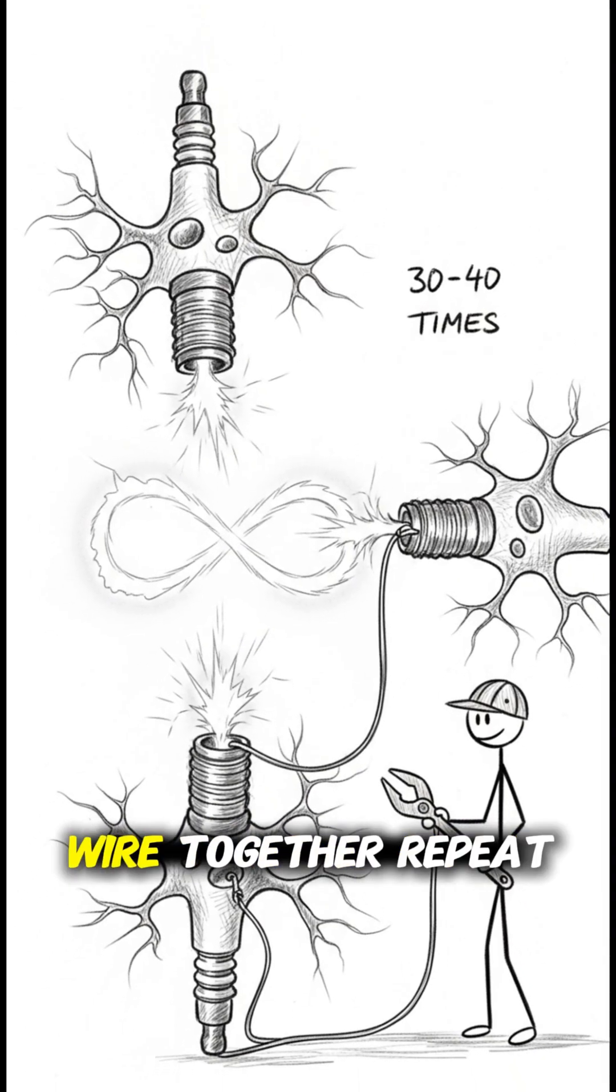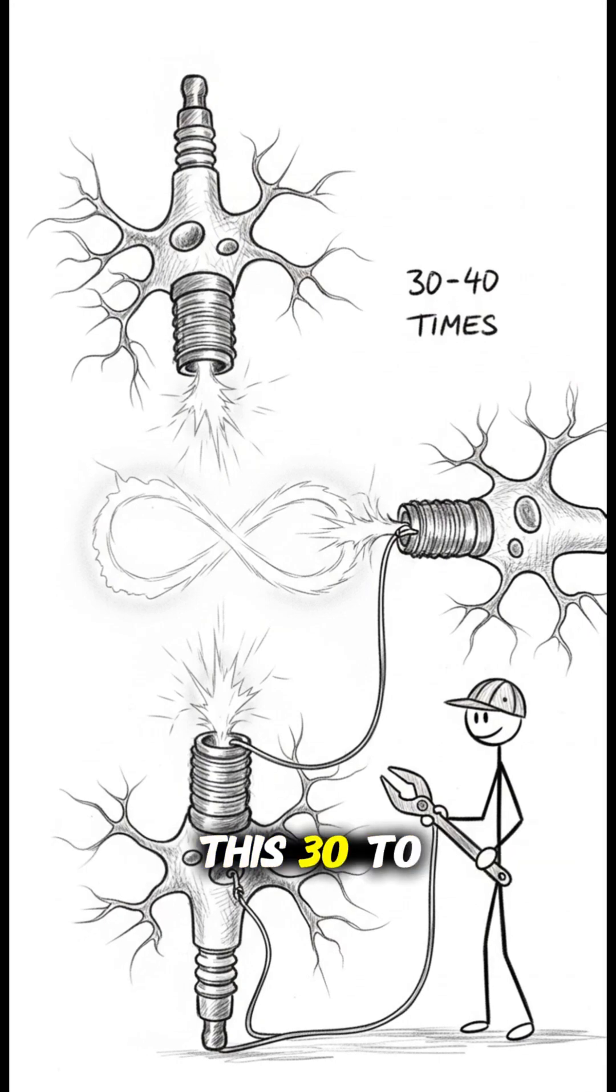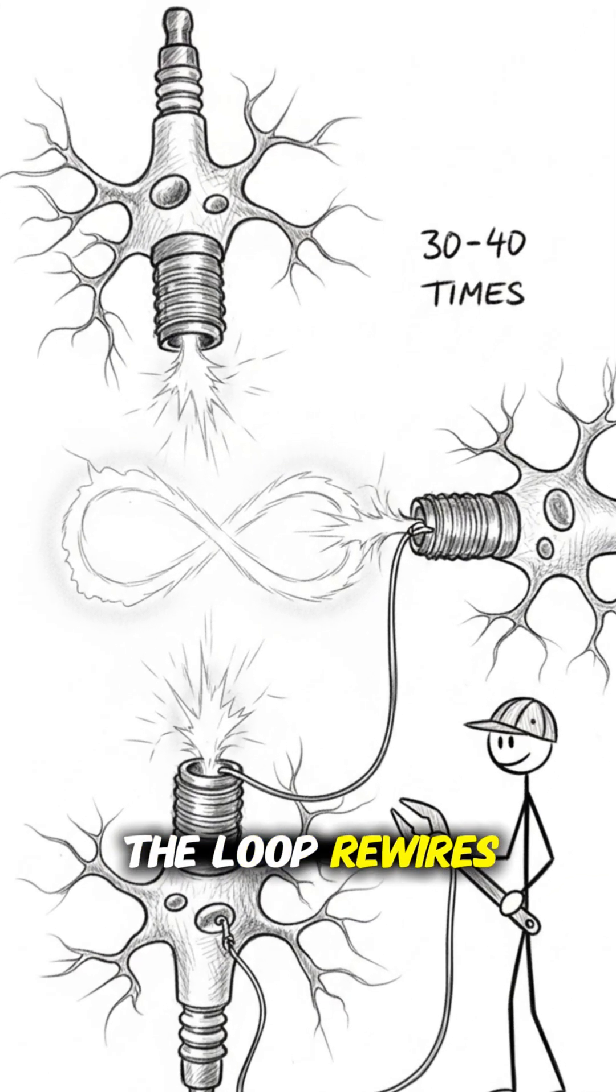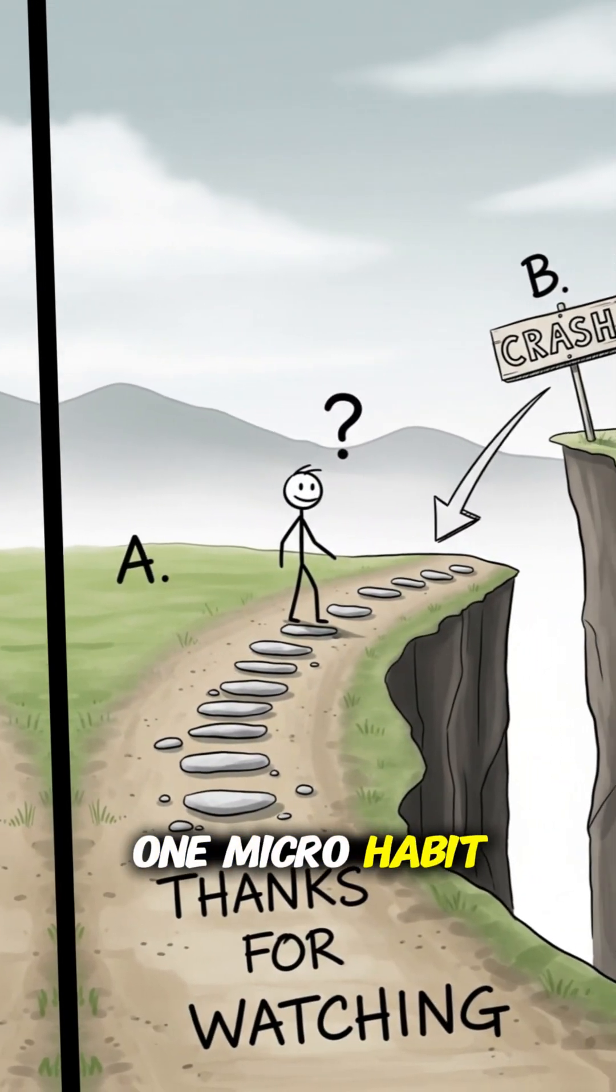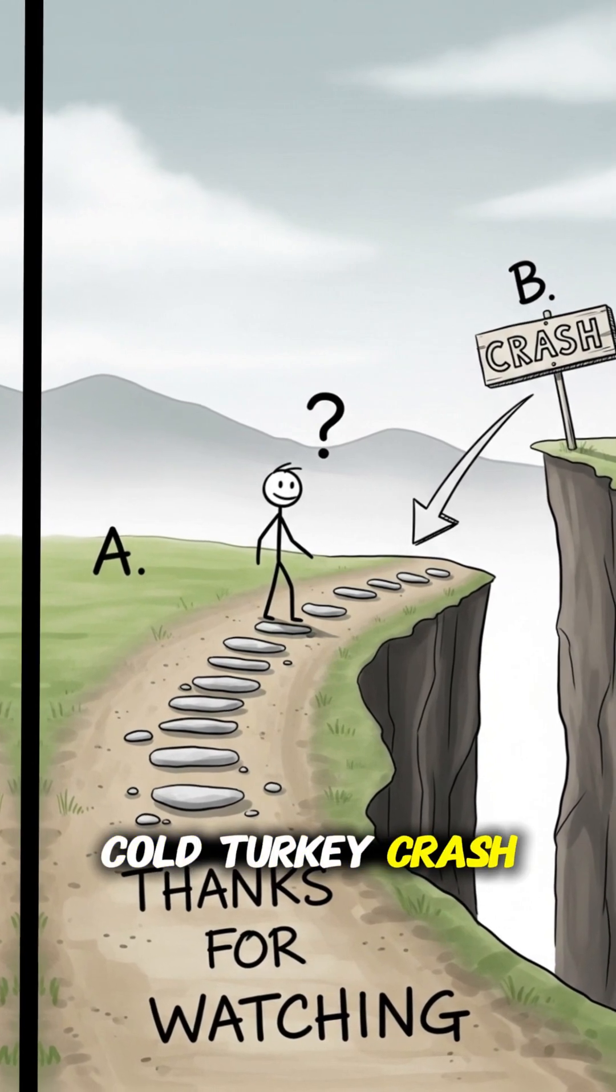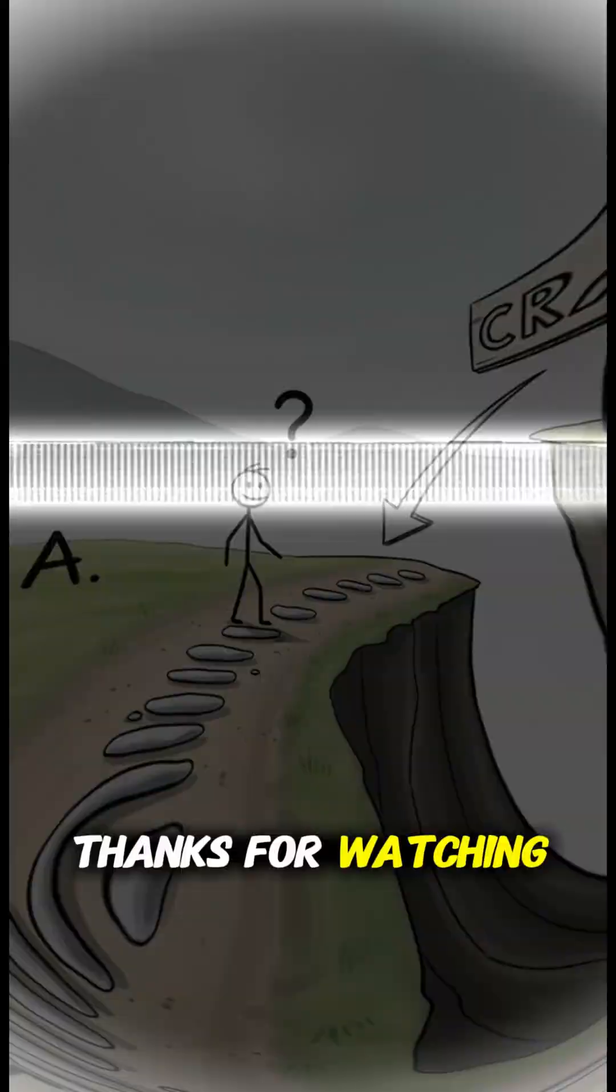Neurons that fire together wire together. Repeat this 30 to 40 times, and the loop rewires itself. One micro habit or another cold turkey crash? Which side are you betting your brain on? Thanks for watching.